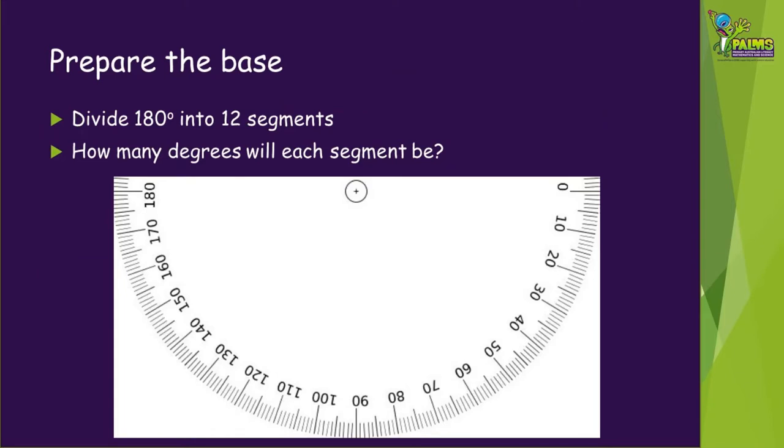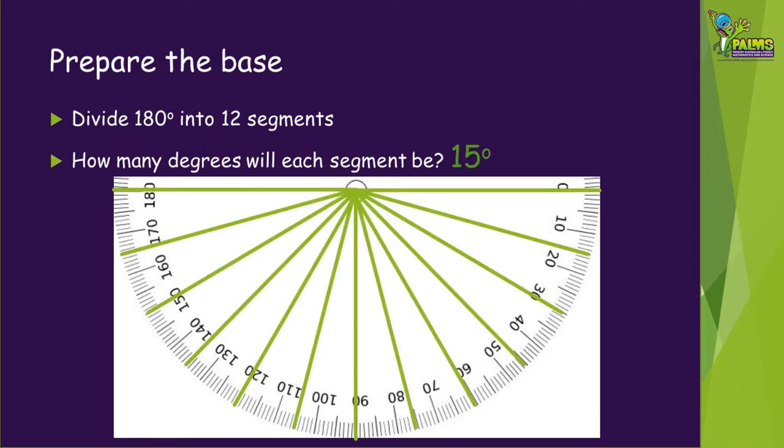The first step is to prepare the base of the sundial. To do this, we'll need to do some maths. To make the base, we're going to need to divide 180 degrees into 12 segments that will represent 12 hours. How many degrees is each segment going to be? Each segment will be 15 degrees.